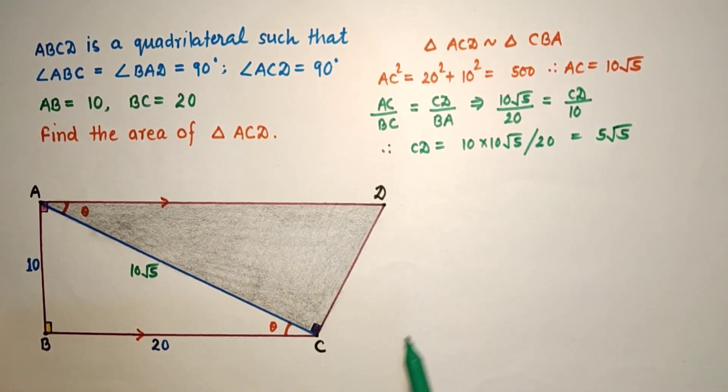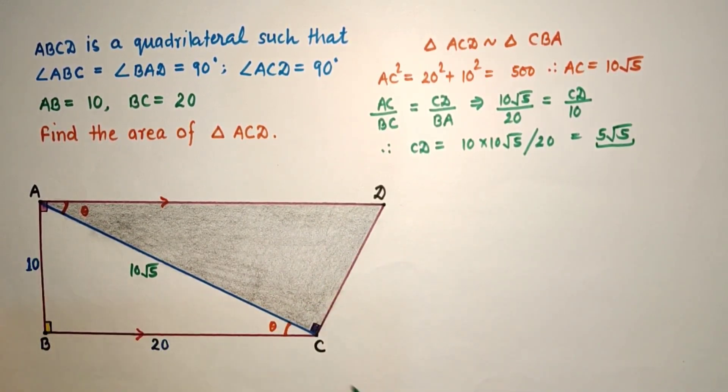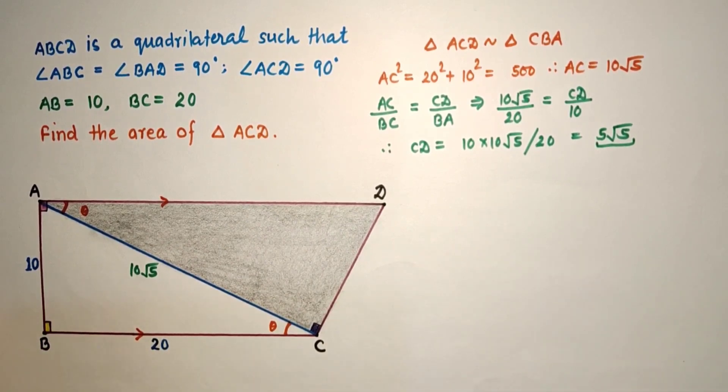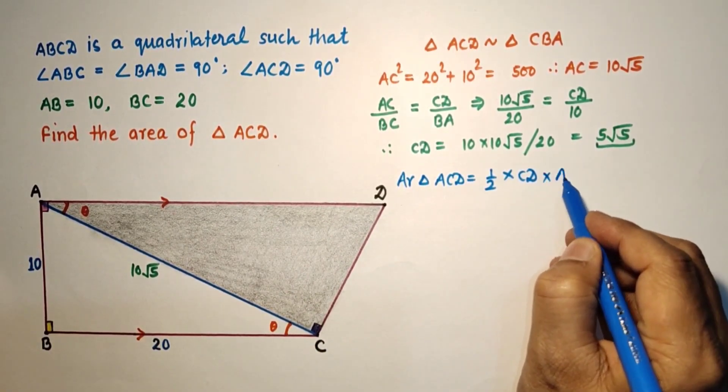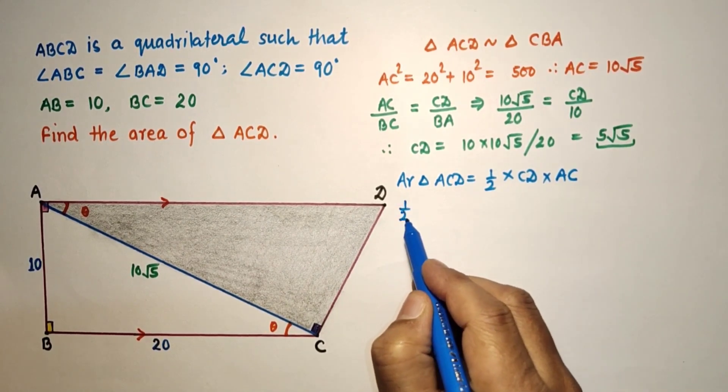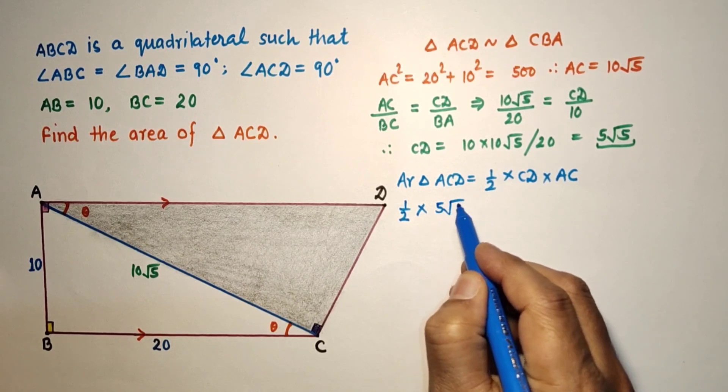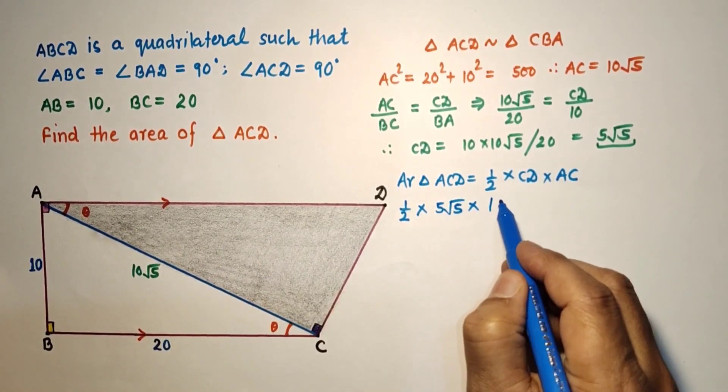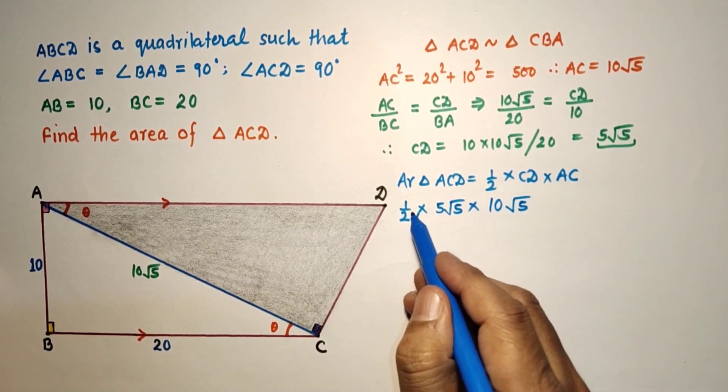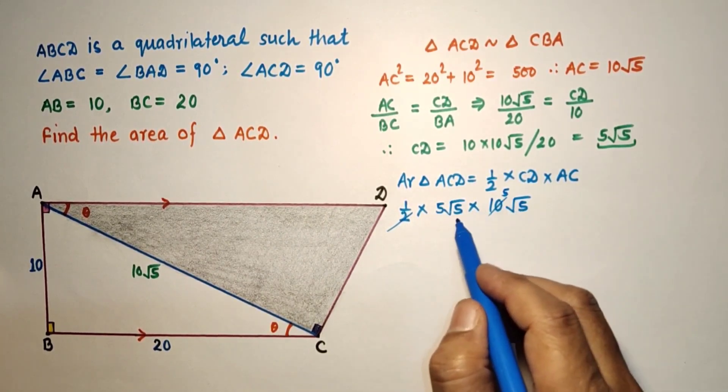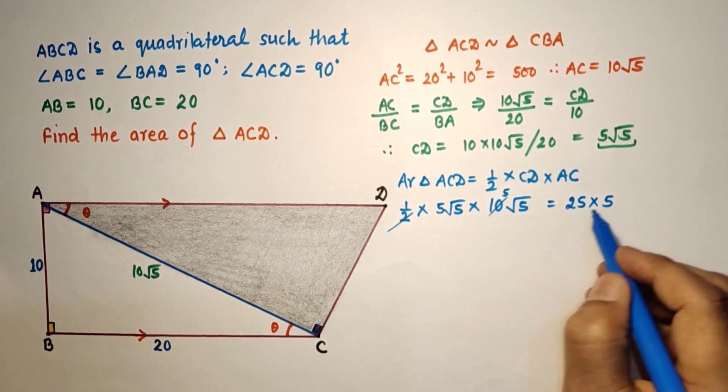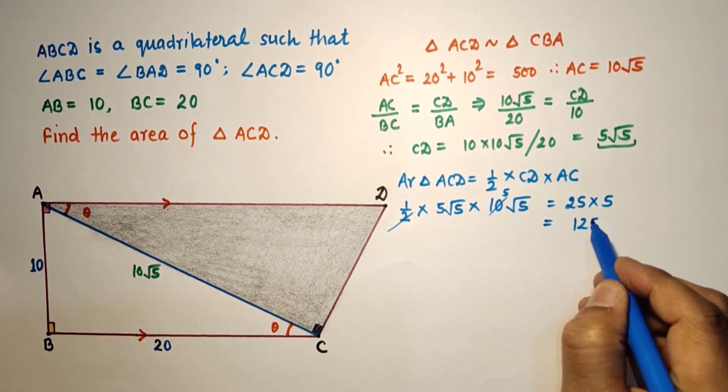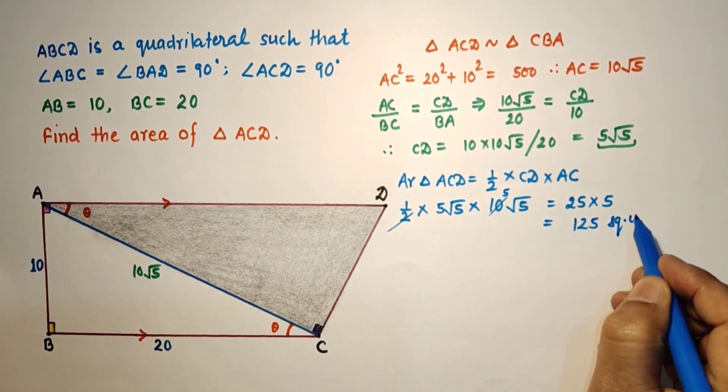So this CD we found is 5 root 5. Now, area of triangle ACD equals half times base times height. Area of triangle ACD equals half times CD, which is the base, and height is AC. That is, half times 5 root 5 times 10 root 5. So 5 times 10 is 50, times root 5 times root 5 is 5, which equals 25 times 5, which equals 125 square units. This is the answer.